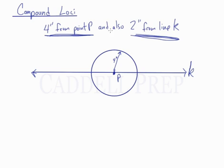Then lines that are 2 inches from K would be a line above K and below K, with a distance of 2 inches from it. So, it looks something like this.